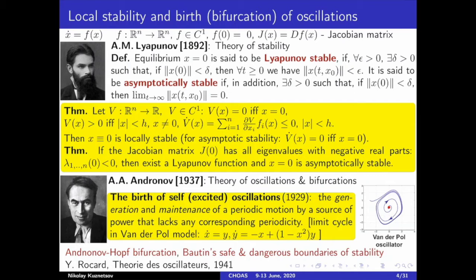In 1892, Alexander Lyapunov published his monograph with the foundation of the stability theory. He suggested a rigorous definition of stability and elaborated a way to establish local stability of smooth dynamical models without integration of trajectories, via the construction of the so-called Lyapunov functions.